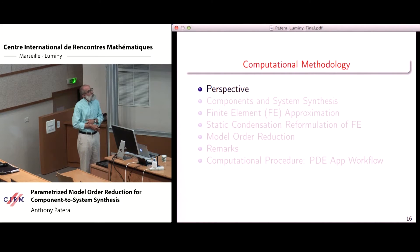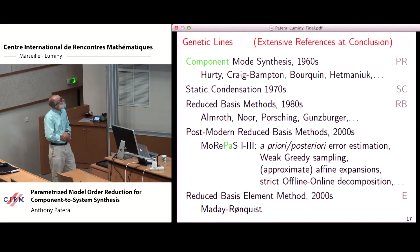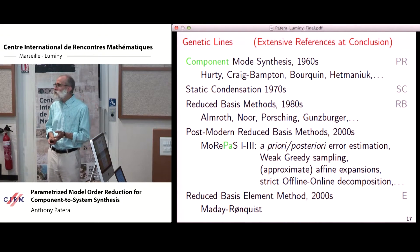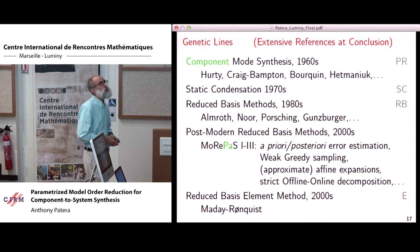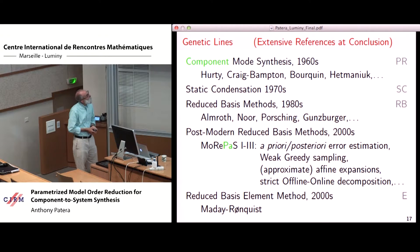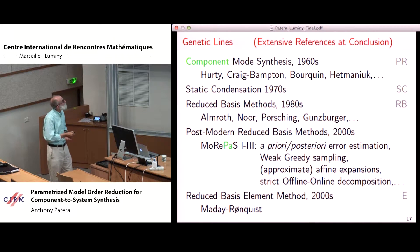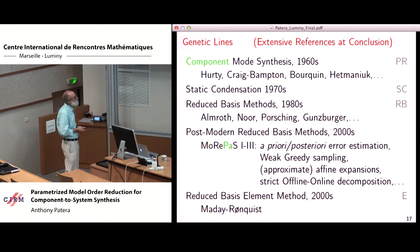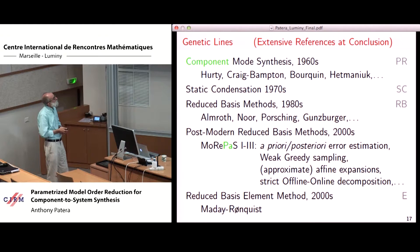Computational methodology: the methods described here combine two streams. The first is component mode synthesis, dating back almost half a century, from which we take the fundamental idea of component-to-system synthesis. The second is the reduced basis method, from which we take the notions of model order reduction for parametric systems — this is where the parameter enters centrally. These two streams have been combined before, most notably in the early 2000s by Volma Day and Einar Ronquist, and what I describe today is one variation on reduced basis element methods combining components and model order reduction for parametrized systems.